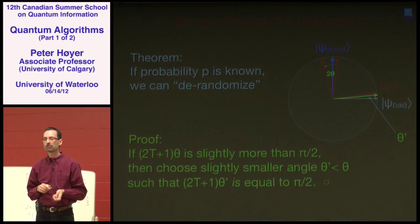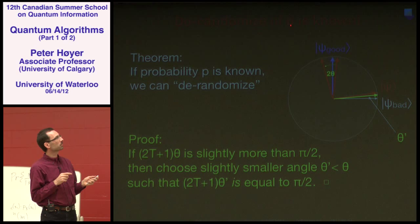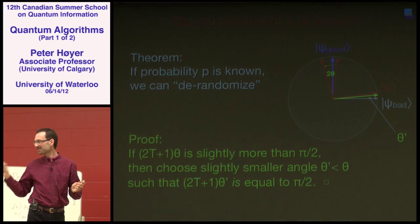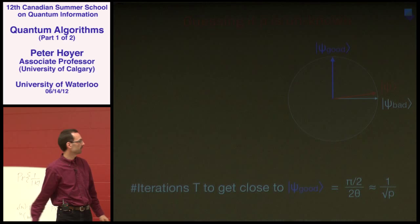If you know θ, i.e., if the initial success probability P is known, then we can derandomize. But what do you do if you don't know the initial success probability P?